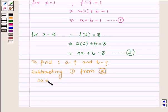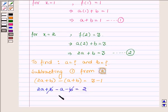Which gives 2a + b minus (a + b) = 3 - 1, which further implies 2a + b - a - b = 2. b cancels out with -b and we have a = 2.